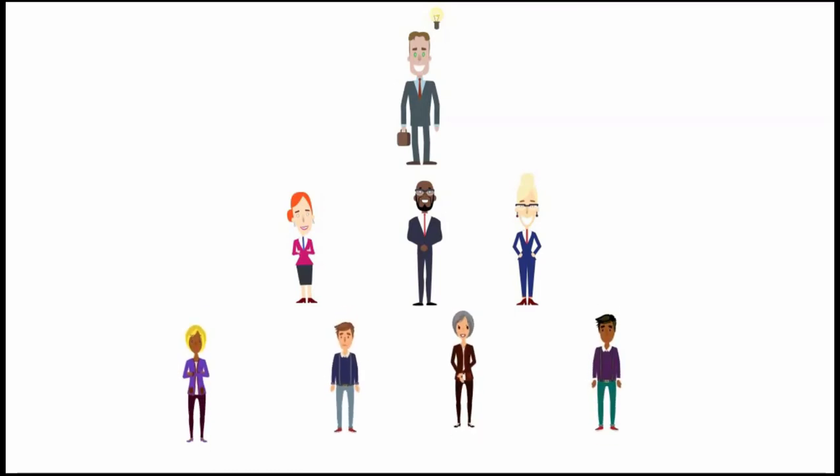First-level supervisory managers consist of supervisors, superintendents, unit heads, foremen, chief clerks, and so on. They are a link between the workers and the middle-level management.